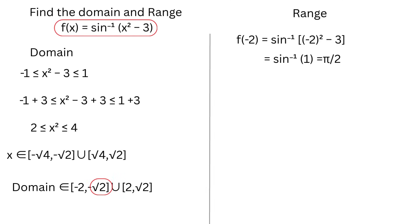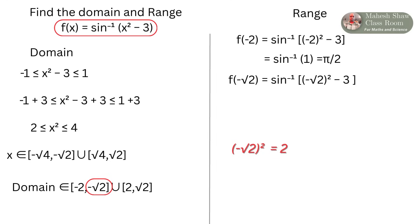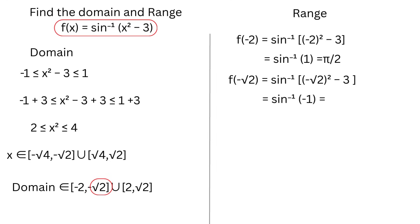Similarly, replacing x with -√2 in the function, we get sin⁻¹((-√2)² - 3). (-√2)² is 2, and 2 - 3 is -1. So we get sin⁻¹(-1), which is equal to -π/2.